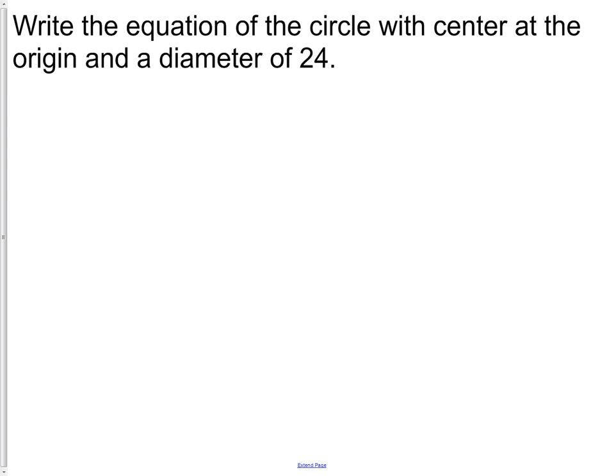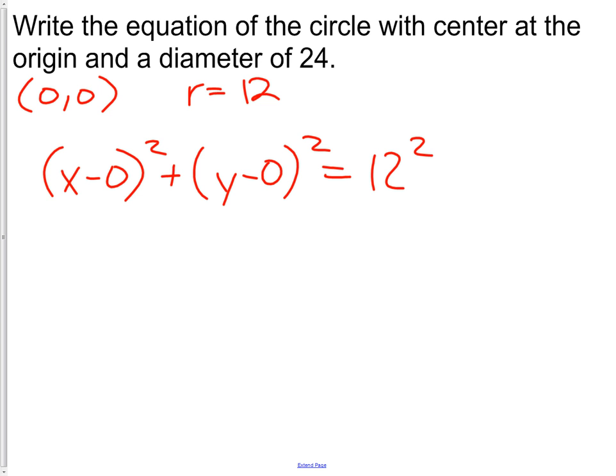Write the equation of a circle with the center at the origin and a diameter of 24. The first thing we need to remember is what are the coordinates of the origin. The origin's coordinates are (0, 0). Now the equation for a circle, if you remember, does not use the diameter. It uses the radius. So we need to find the radius, which for this problem is going to be 12, because it's half the diameter. We now have enough information to write our equation. x minus h squared plus y minus k squared equals radius squared. Or simply, x squared plus y squared equals 144.